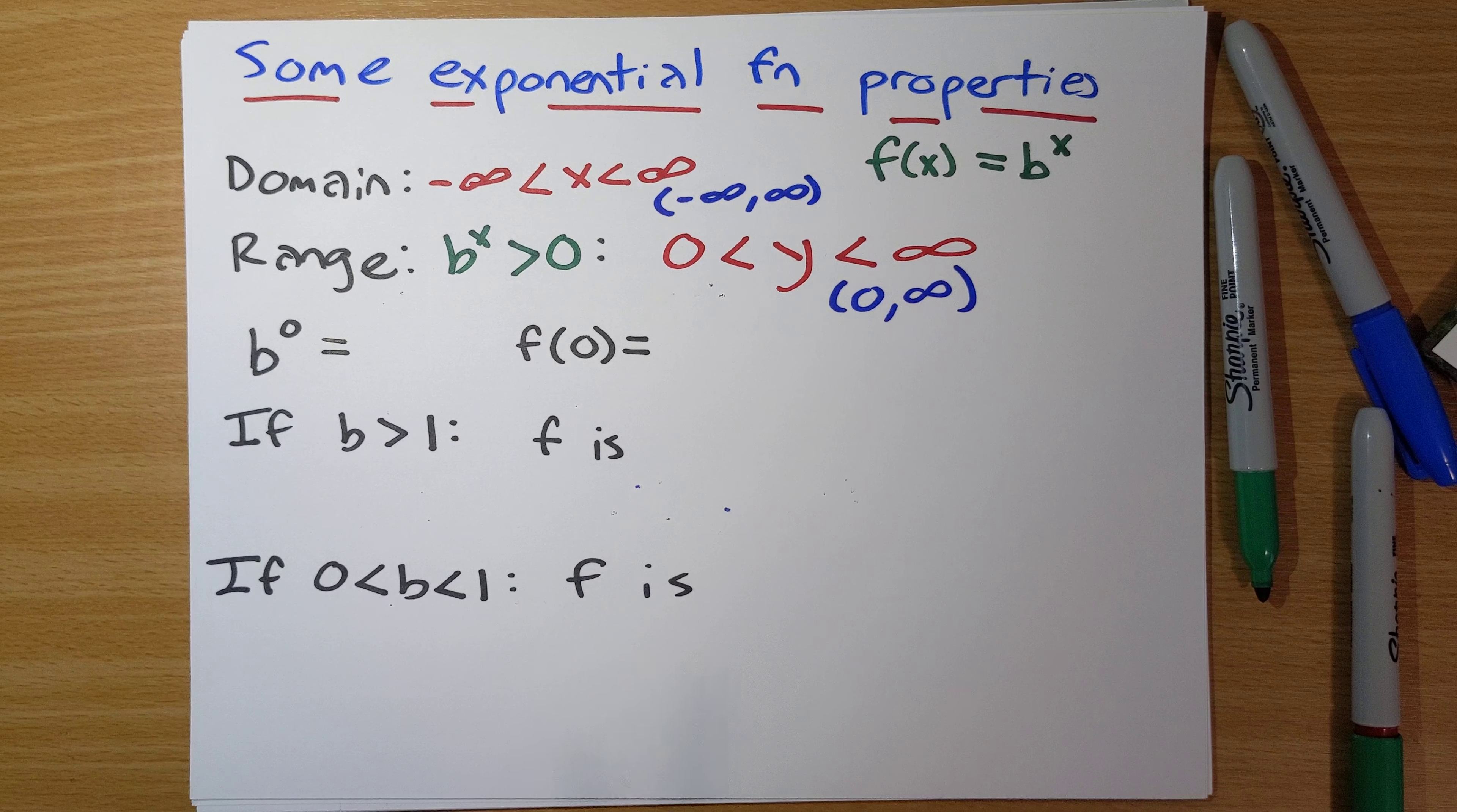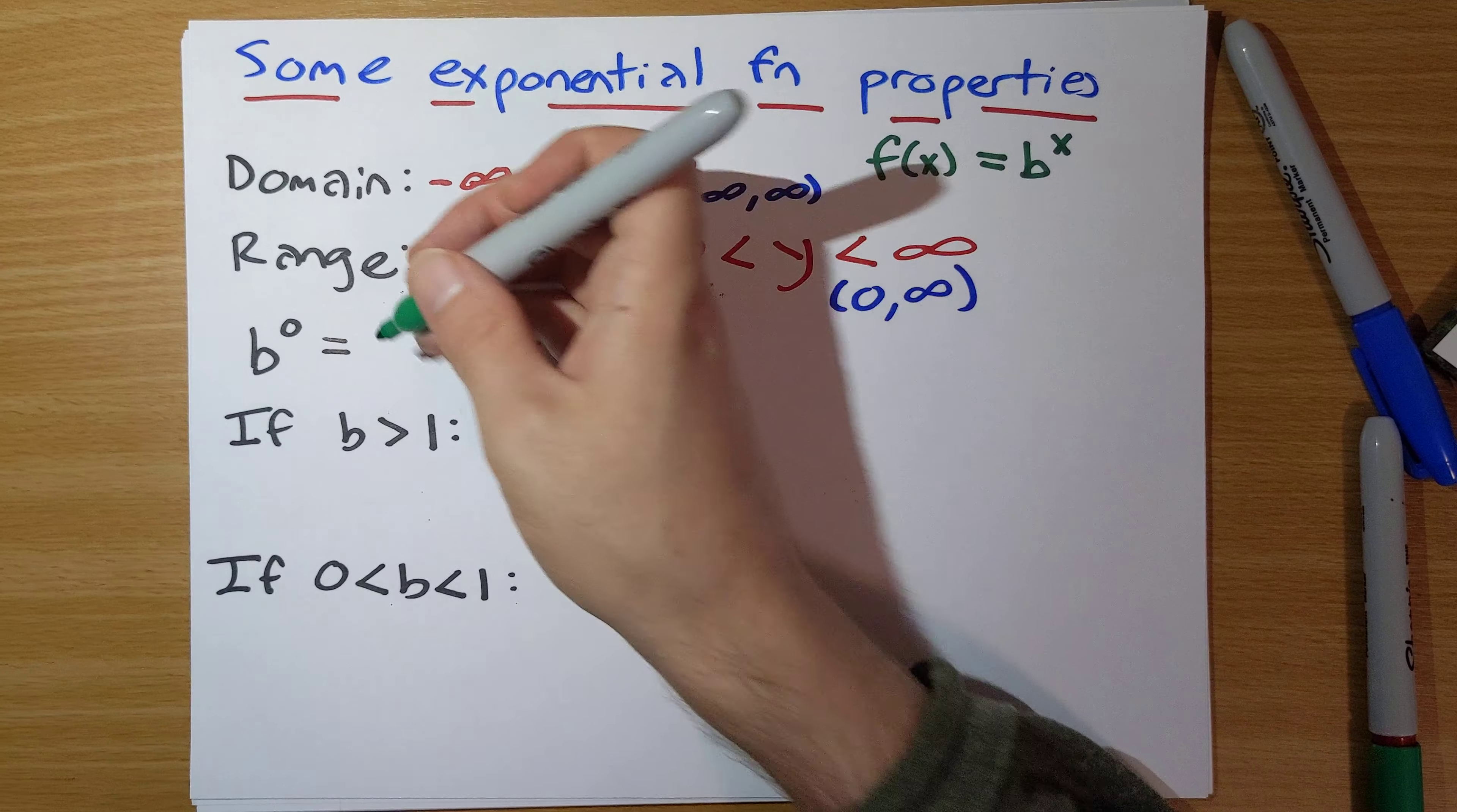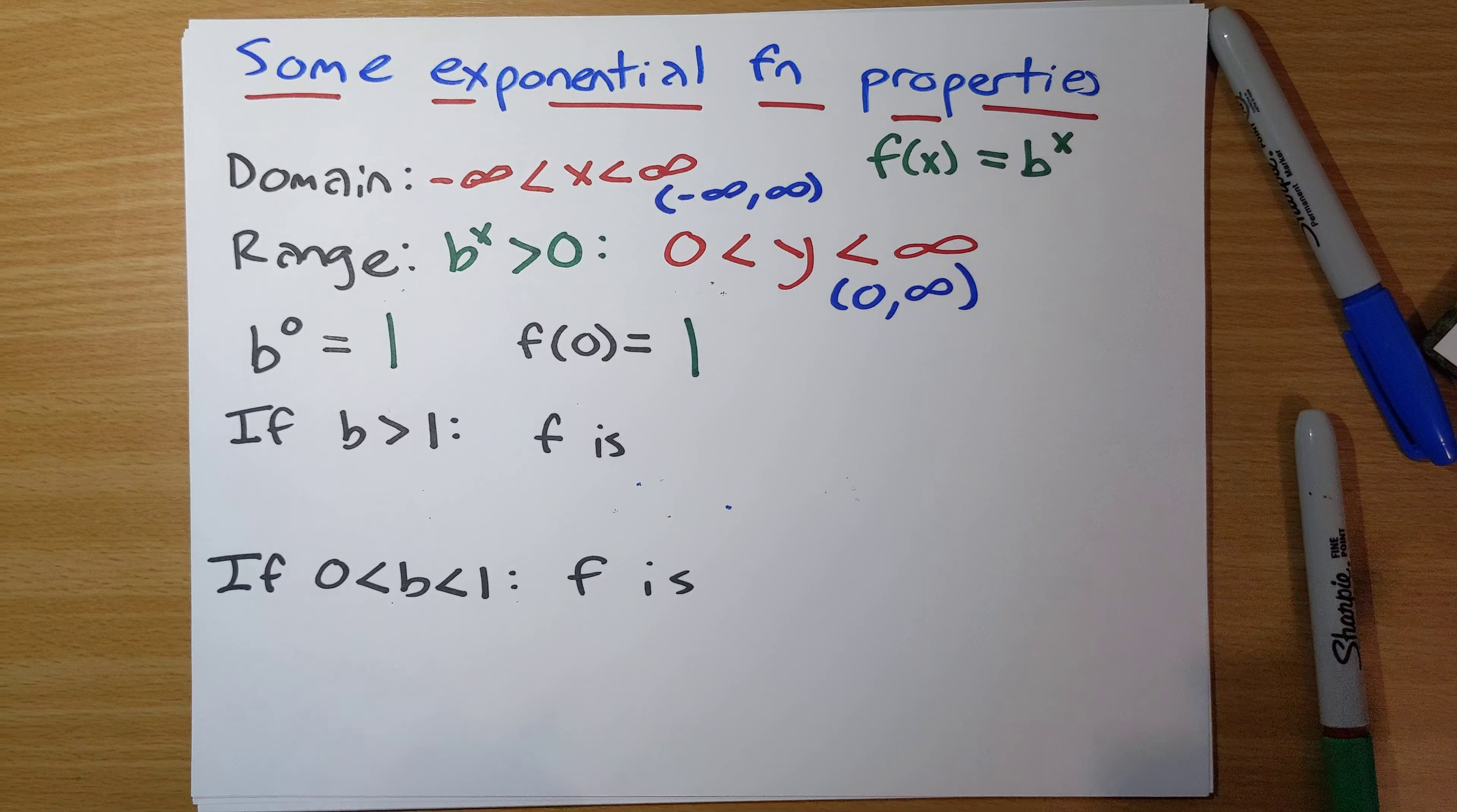B to the 0: take any number, raise it to the 0th power, you get 1. When I say any number, let's assume it's a positive number, like here, like we're assuming. So b to the 0 is 1, so f of 0 is 1.